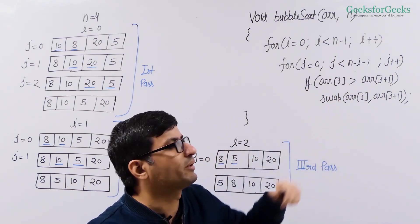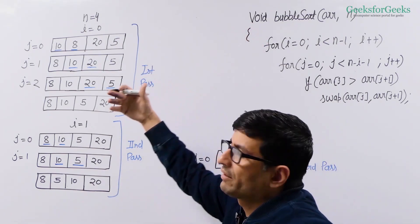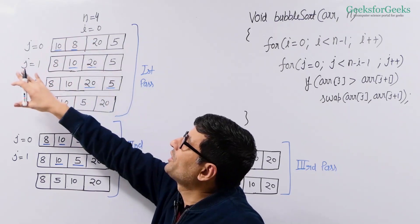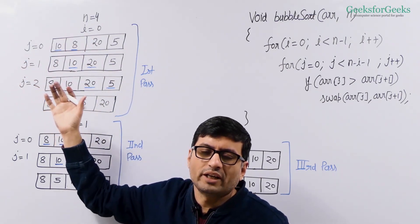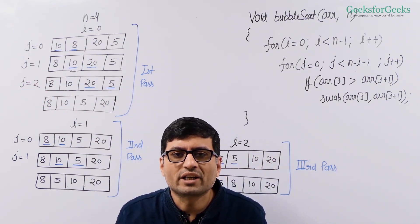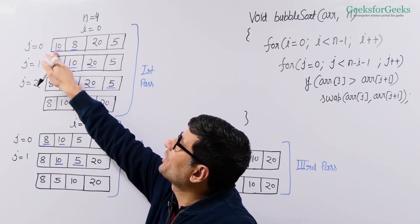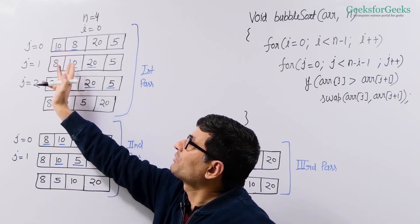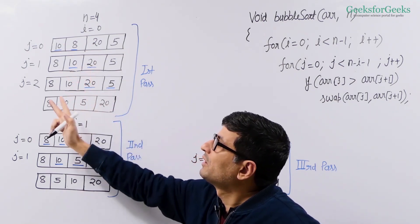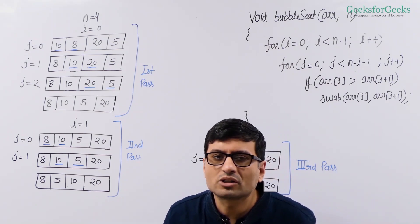Let's now see the working of this optimized code. i stands for the current pass and we are going to have n minus 1 passes, so i varies from 0 to n minus 2. For pass i equal to 0, we run a loop for j equal to 0 to n minus 2. With n equal to 4, n minus 2 is 2. For every j, we compare array[j] with array[j+1], and if they are out of order, we swap them. When j is 0, we compare index 0 and 1 — they are out of order, so we swap them. When j is 1, we compare index 1 and 2 — they are already in order, so we do not swap. When j is 2, we compare index 2 and 3 — they are out of order, so we swap them.